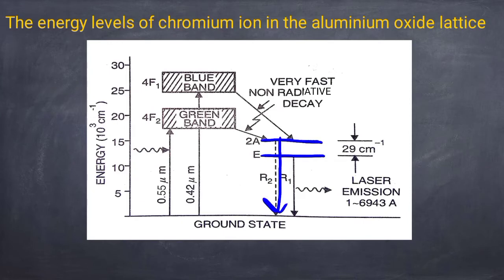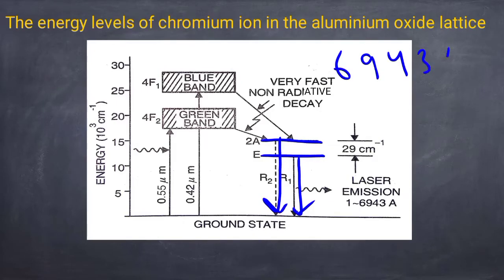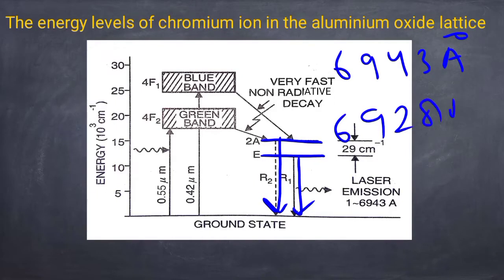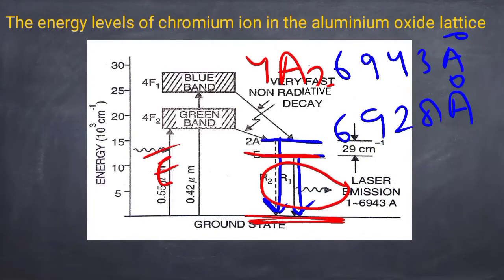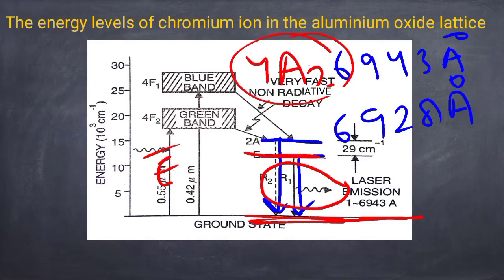When atoms decay to the ground state, we get doublet lines R1 and R2. R1 has a wavelength of 6943 Å and R2 has a wavelength of 6928 Å. However, laser action takes place only at the R1 line, that is between E-bar and the ground level (4A2 level).